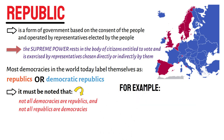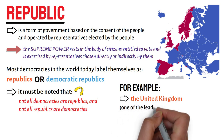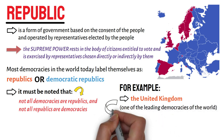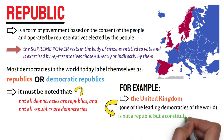For example, on the one hand, the United Kingdom, one of the leading democracies of the world, is not a republic, but a constitutional monarchy.